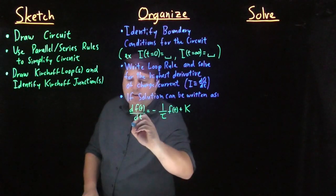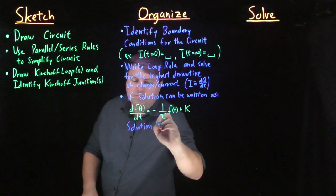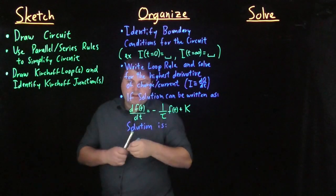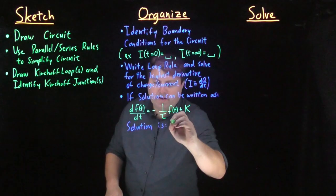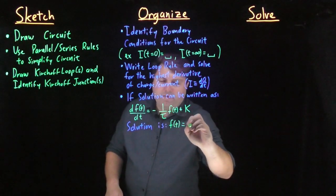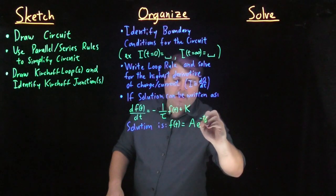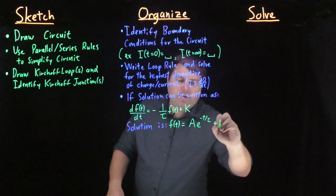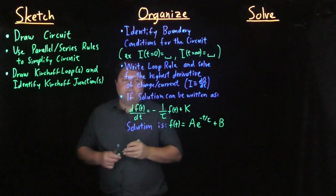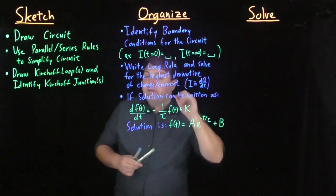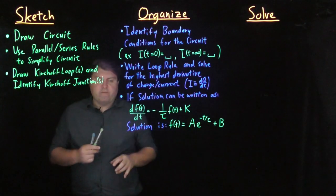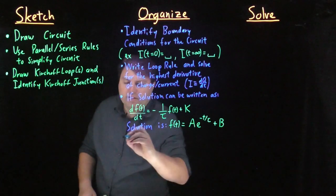Then we know that our solution is that f of t is equal to a, some maximum value, e to the negative t over tau, plus some constant b. b and k are very rarely going to be the same values, so make sure that they are not the same.